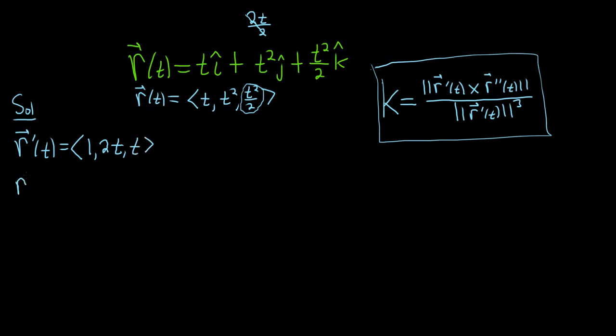Let's find the second derivative. So r double prime of t. So the derivative of 1 is 0, the derivative of 2t is 2, and the derivative of t is 1.